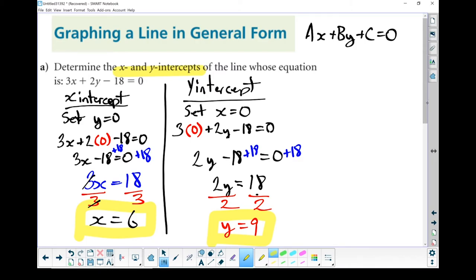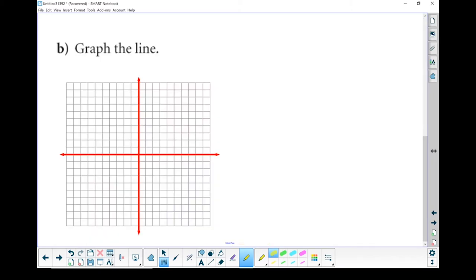The final step is to graph it. So we're going to graph that line. Just as a reminder, x-intercept equals 6. And the y-intercept equals 9. So this is my x-axis.